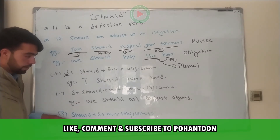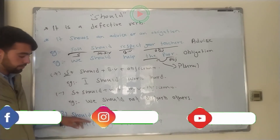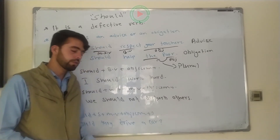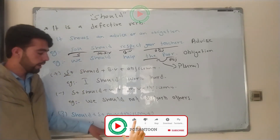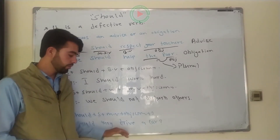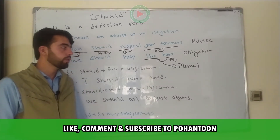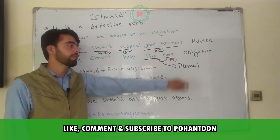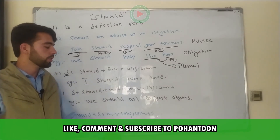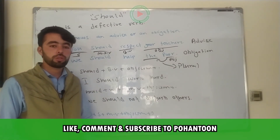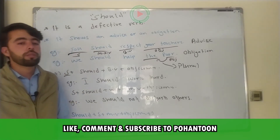The interrogative structure is: Should + subject + main verb + object or complement + question mark. For example: 'Should they drive a car?' — Yes, they should drive a car. No, they shouldn't drive a car.